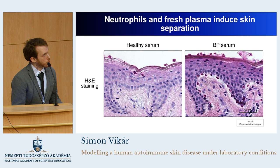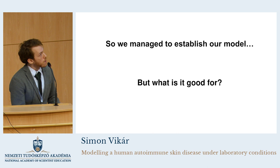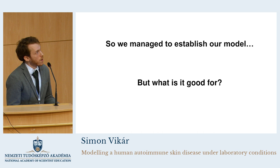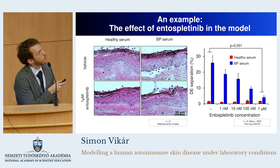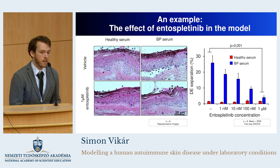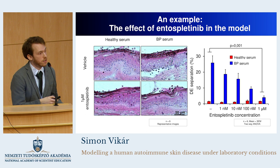Hooray — we managed to establish it! But the next question is: what can we do with this model? Why is it useful that we established it? To understand this, I want to show an experiment where we examined the effect of an inhibitor called anthospetinib. This is an inhibitor known to block an intracellular molecule in immune cells, but has no current medical use. So it was not clear if it could have any effect on the dermoepidermal separation in our model.